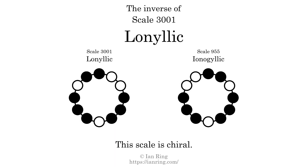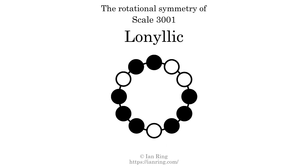The inverse of a scale is a mirror image. It is what you get when the sequence of intervals is reversed. The inverse of this scale is scale 955, also known as ionogelic. This scale is chiral — it cannot transform into its inverse by rotational transformation. This scale has no rotational symmetry.